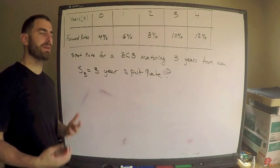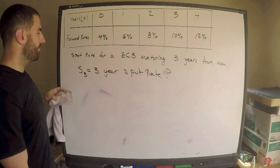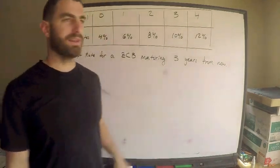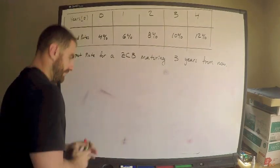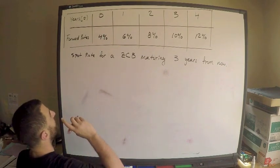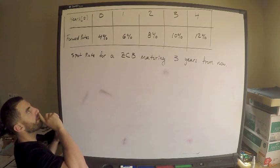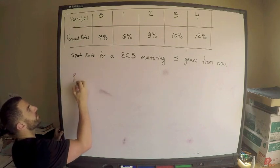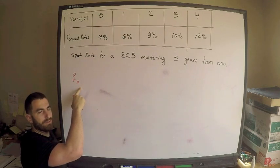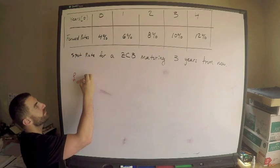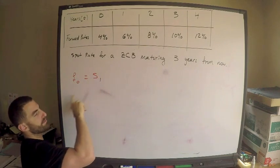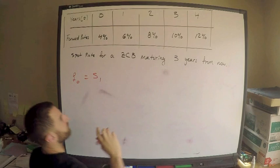What is a nice relationship between the spot rate and the forward rate? This is pretty much the only one I try to remember, and everything basically comes from this. So: f sub 0, the one-year forward rate from now, is equal to s₁. From this alone it means nothing — who cares about this by itself.